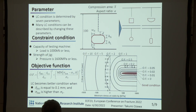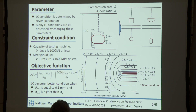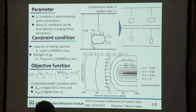This slide shows the information of the optimization. The LC condition is determined by seven parameters: the compression area S, the aspect ratio A, the distance from the future crack tip D, and the corner dimensions WN, WL, HN, and HL. As shown in the right figure, many LC conditions can be described by changing these parameters. For constraint conditions, we decided that the load is 1,000 kN or less, taking into account the capacity of a general testing machine, and pressure is 1,600 MPa or less, taking into account the strength of the jig.